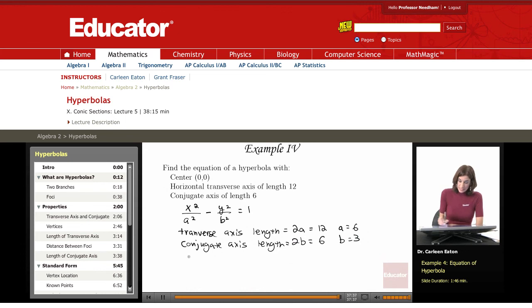Now, I need to find a squared, which is 6 squared, or 36, to put in here. B squared is 3 squared, which is 9.